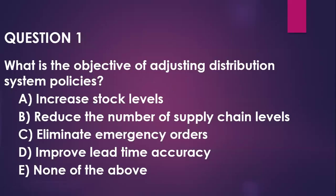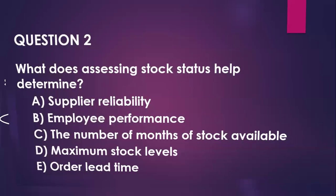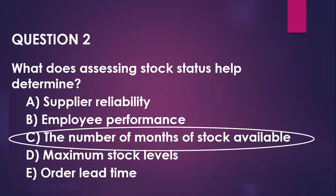Question number one: what is the objective of adjusting the distribution system policies? Usually you adjust them because you want to reduce the number of supply chain levels — you want to reduce the pipeline. So you could adjust the distribution system policies. Question number two: what does assessing stock status help to determine? You want to be able to determine the number of stock available, not just the stock you have, but how long it can last you.